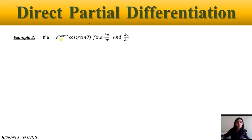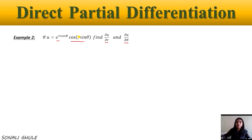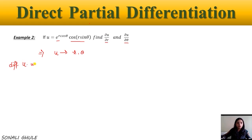Example 2: Given u = e^(r cosθ) · cos(r sinθ), find the partial derivatives with respect to r and θ. Here u depends on two variables r and θ. To find ∂u/∂r, we differentiate with respect to r while keeping θ constant.